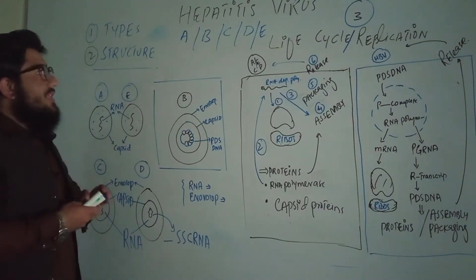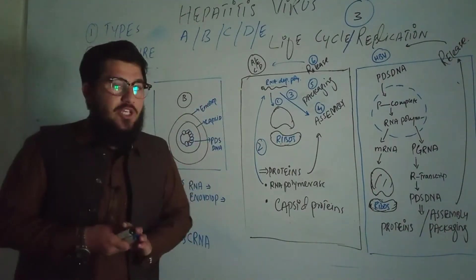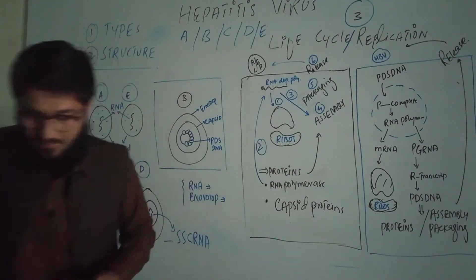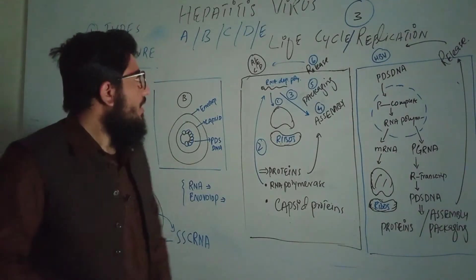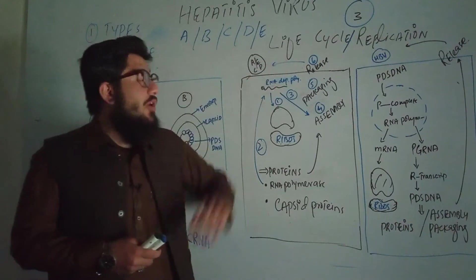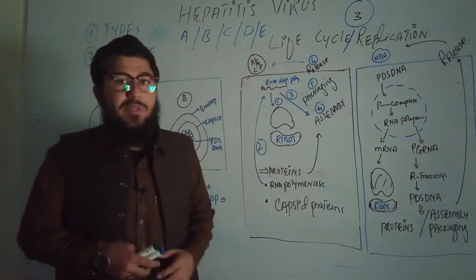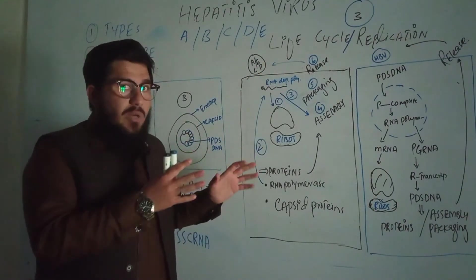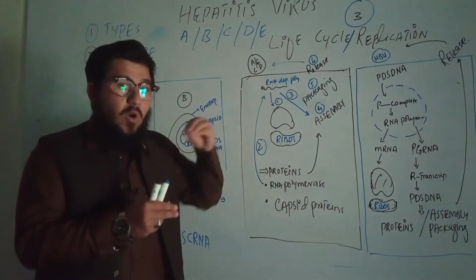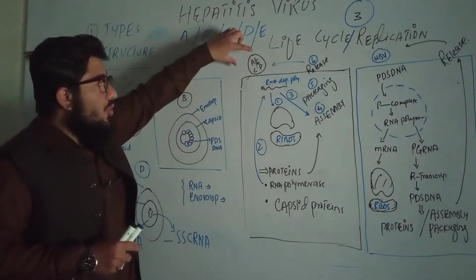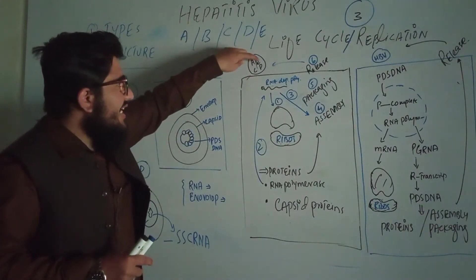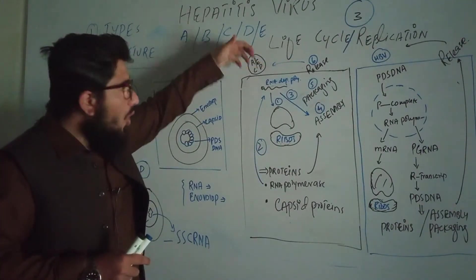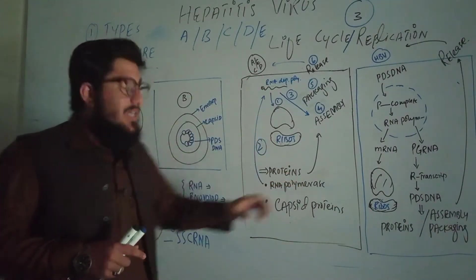Now moving to the third point — the life cycle or replication. This schematic diagram covers all the viruses. For A, E, C, and D they all undergo the same replication mechanism.